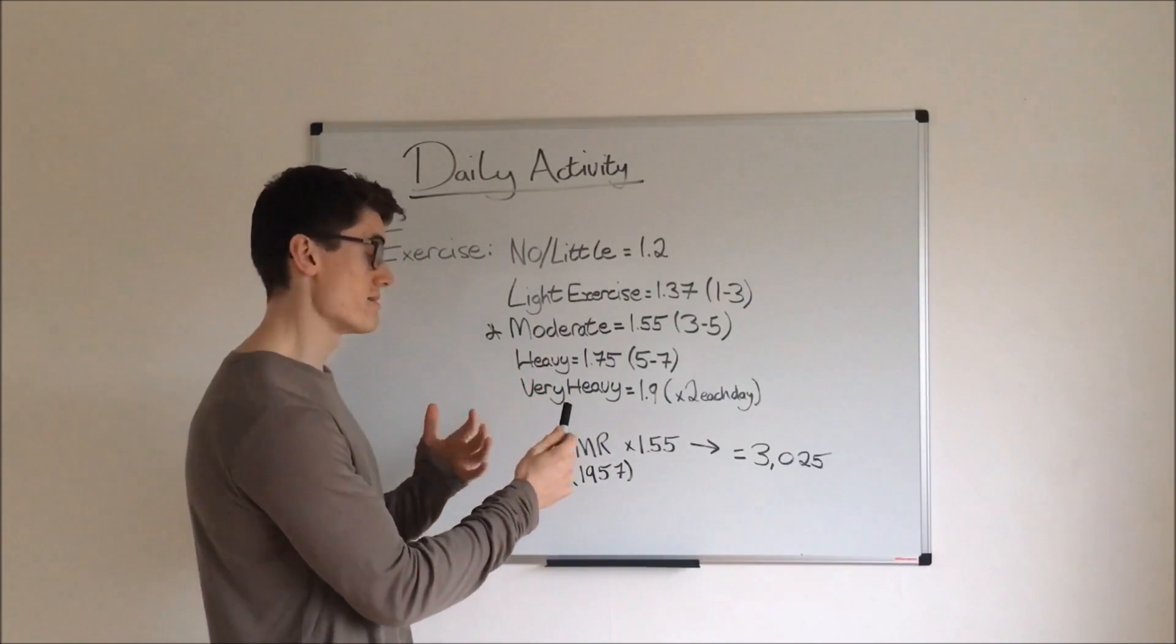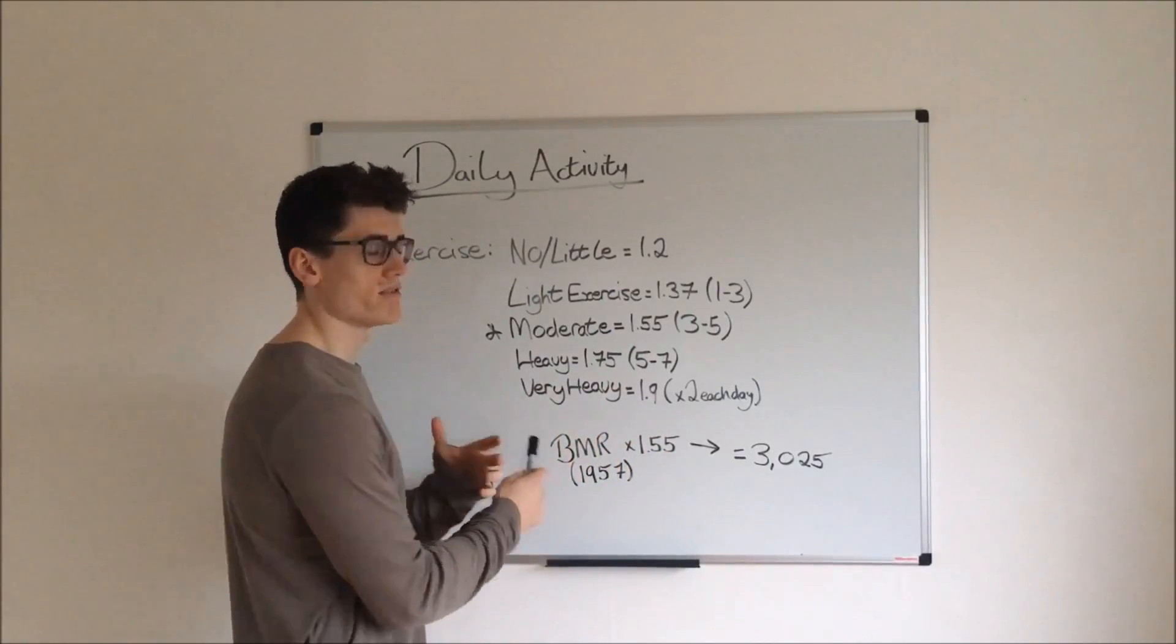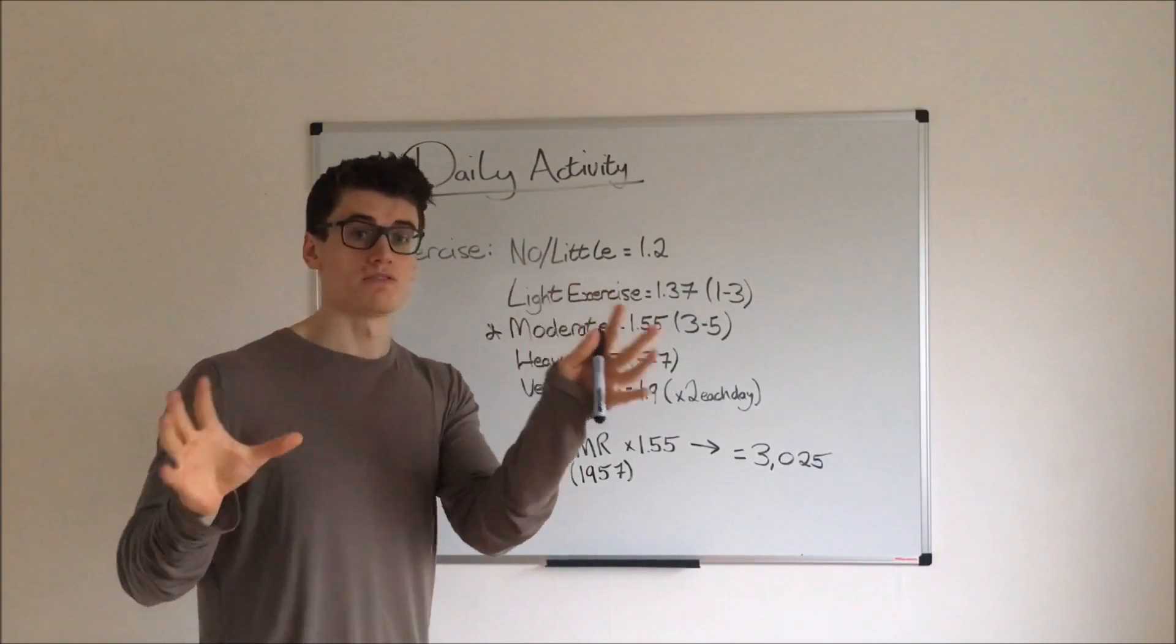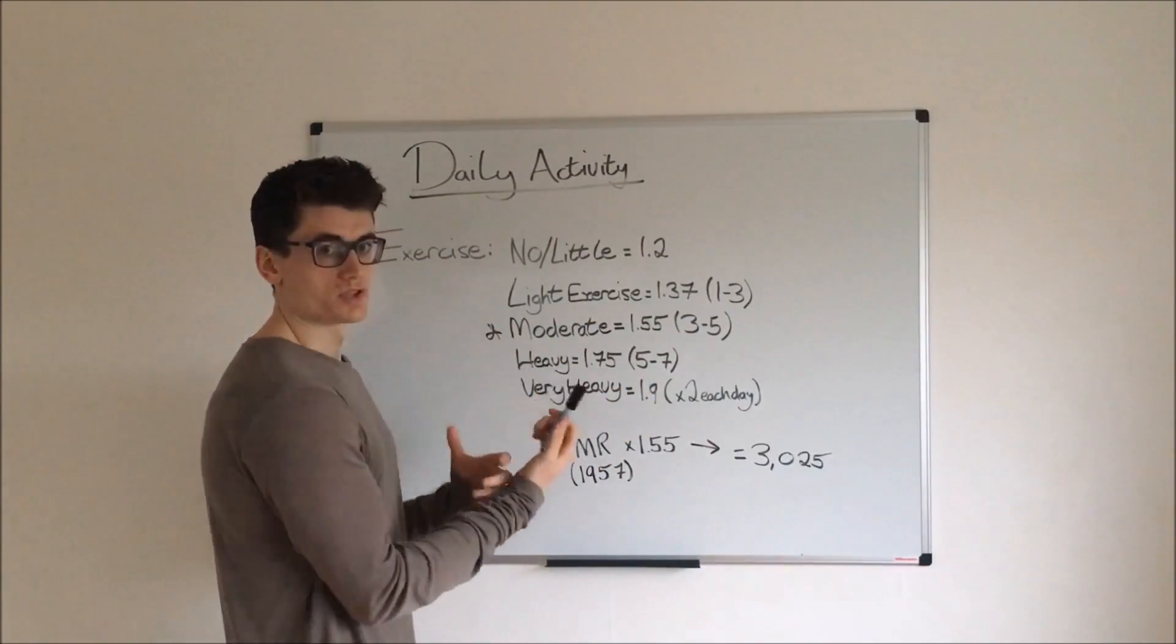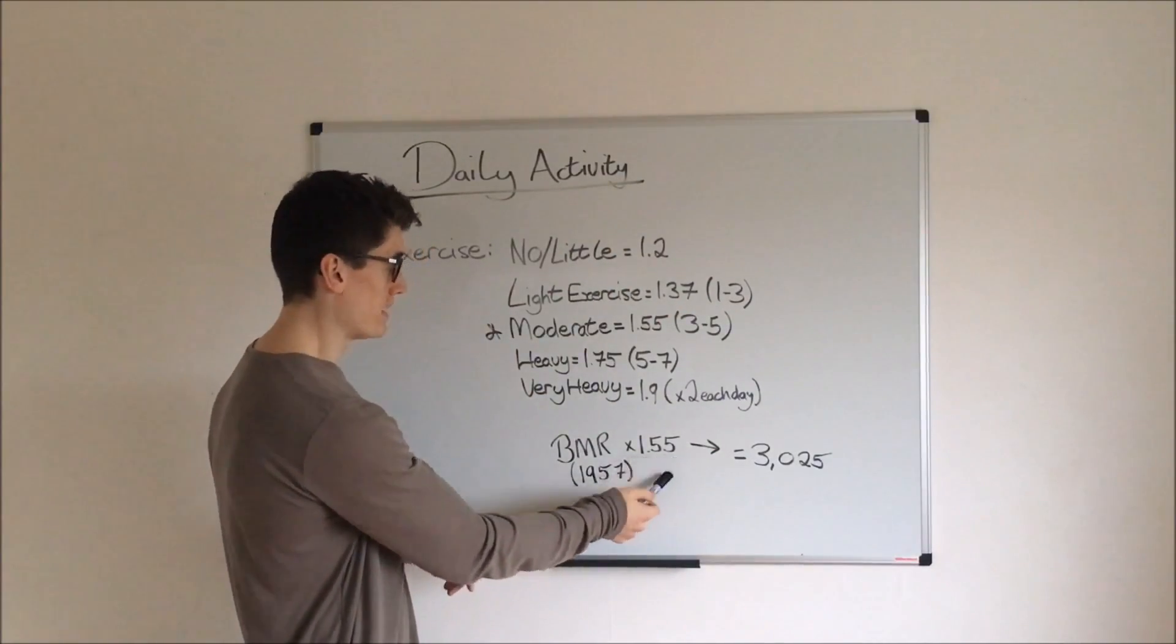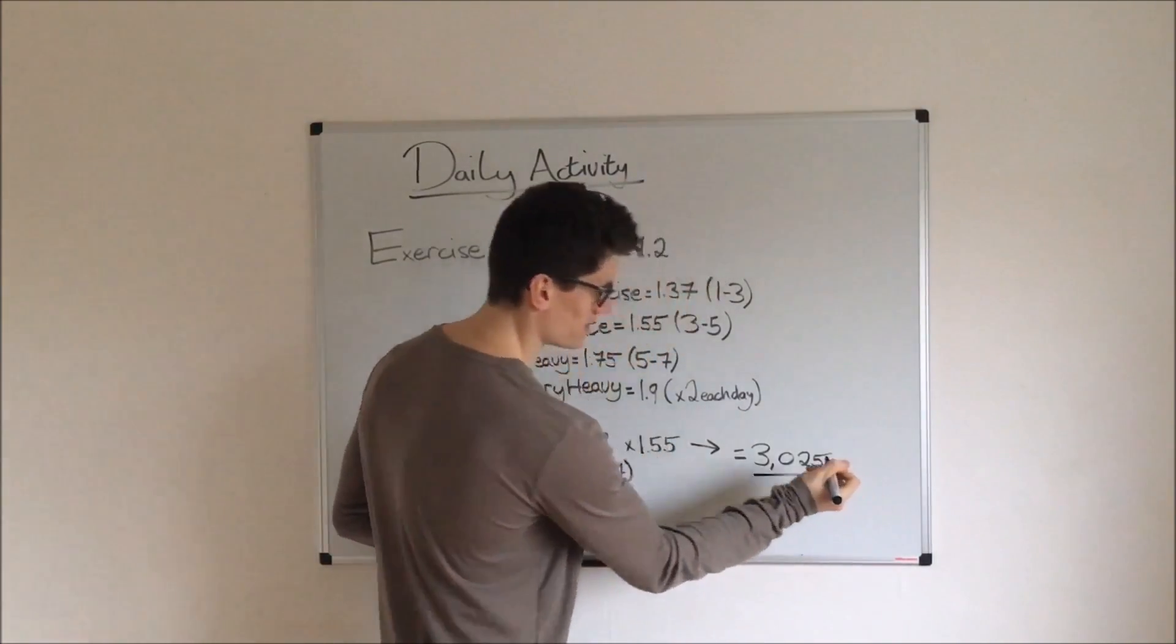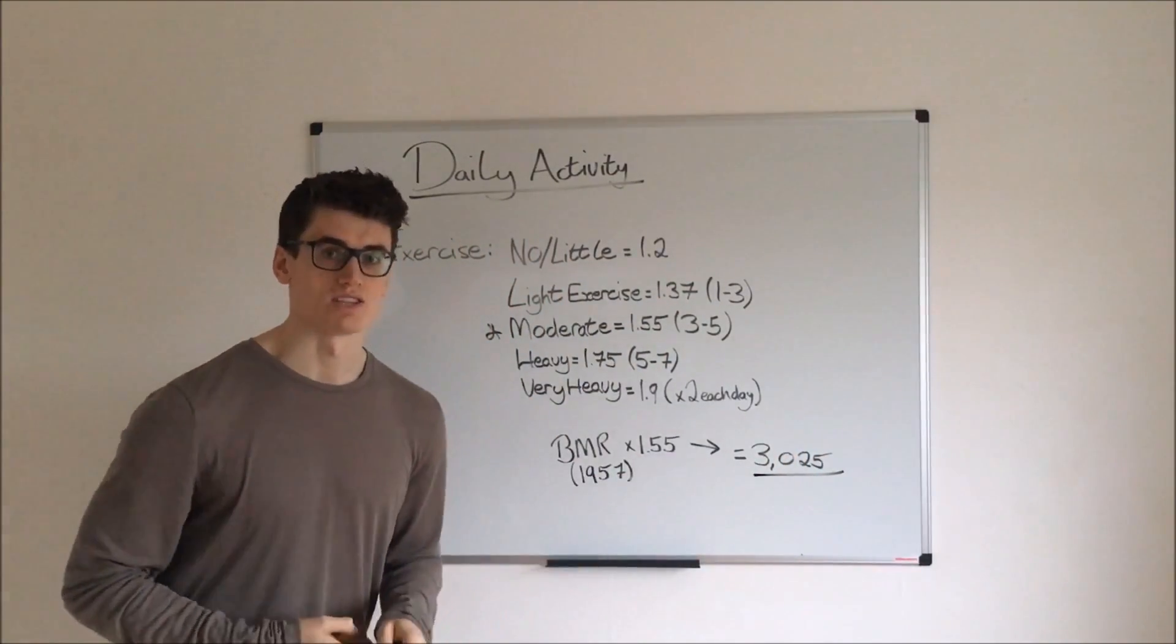In terms of very heavy, I say this may be quite uncommon, but maybe it's not. Very heavy refers to somebody who works five to seven days a week, and they probably do two bouts of exercise each day. As I've already mentioned, I'm moderate. So what we do now is we take our BMR from the previous equation and then we times it by your classification—me being 1.55—and then I come out with a final figure. As you can tell, mine is just over 3,000 calories.